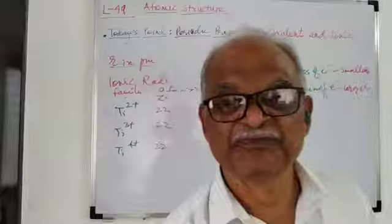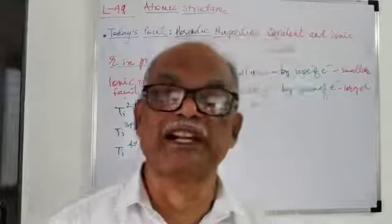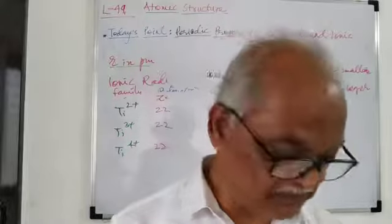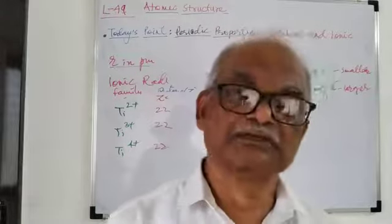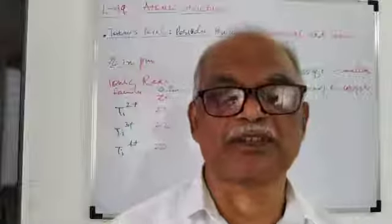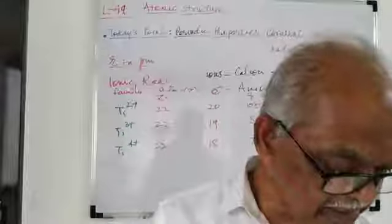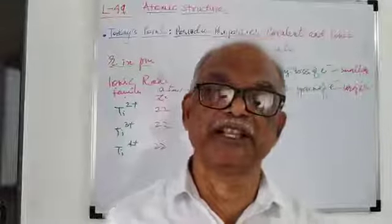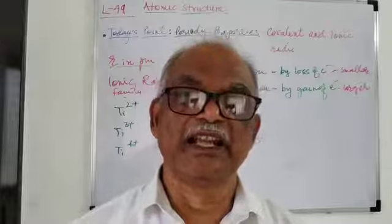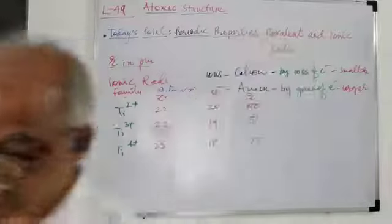This is the overall effect on the size — covalent and ionic radii of elements in the periodic table. With this, we have completed this topic of atomic structure. Next time we will see the new topic of molecular orbital theory. Till then, goodbye. Please subscribe to this channel and press the like button and bell icon. Thank you very much for watching this video.